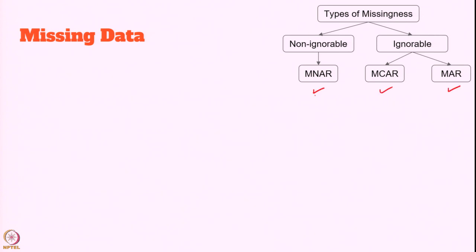MCAR means missing completely at random — there is no relationship between the missing data and other values observed or unobserved in the dataset. The missing values are completely independent of other data and there will be no pattern. For example, results obtained from a student based on the place they lived before does not make much sense — it is independent of the region, so this can be an example of MCAR.